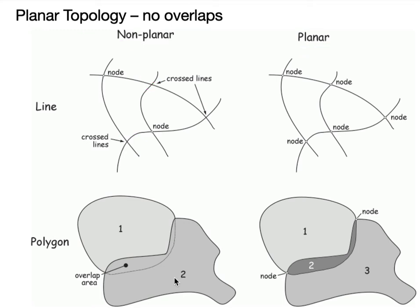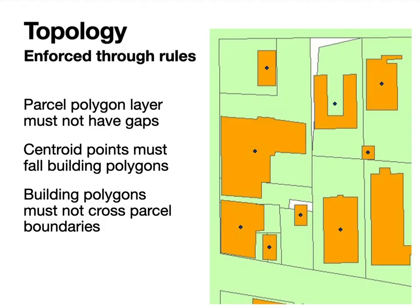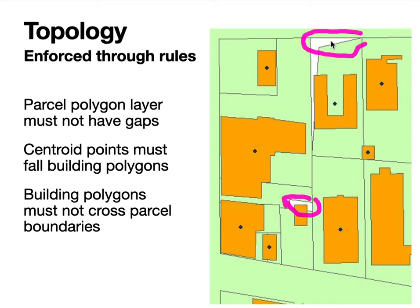We want to make sure our data are planar and topologically correct. We enforce topology through rules, typically using algorithms to apply to data to make sure they meet those rules. For example, one rule says parcel polygons must not have gaps. Here I have a set of parcels shown in green, and we have gaps between parcels — areas in white where they don't completely cover the landscape. This is probably an omission where a parcel wasn't digitized, or an error where snapping wasn't set to ensure edges connect.